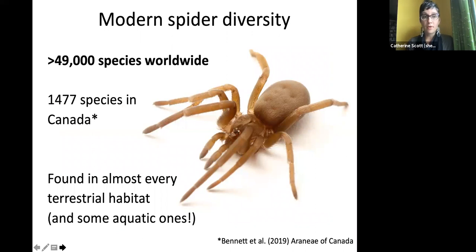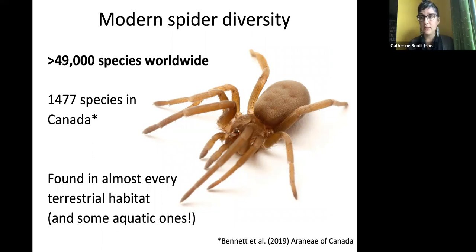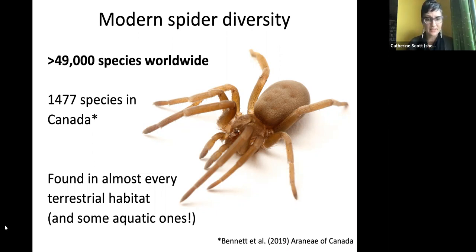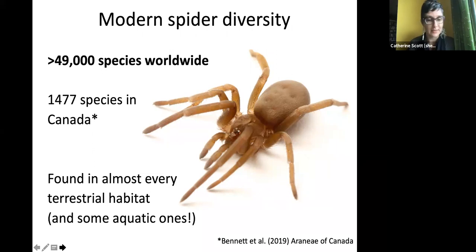Today we have more than 49,000 species of spiders worldwide, with almost 1,500 species in Canada as of 2019 — and that number is probably higher now. Spiders are found in almost every terrestrial habitat: deserts, beaches, mountaintops, near ponds, and even in the Arctic. There's a spider that lives near the top of Mount Everest. They live on all continents except Antarctica, and some even live on beaches periodically submerged by salt water.